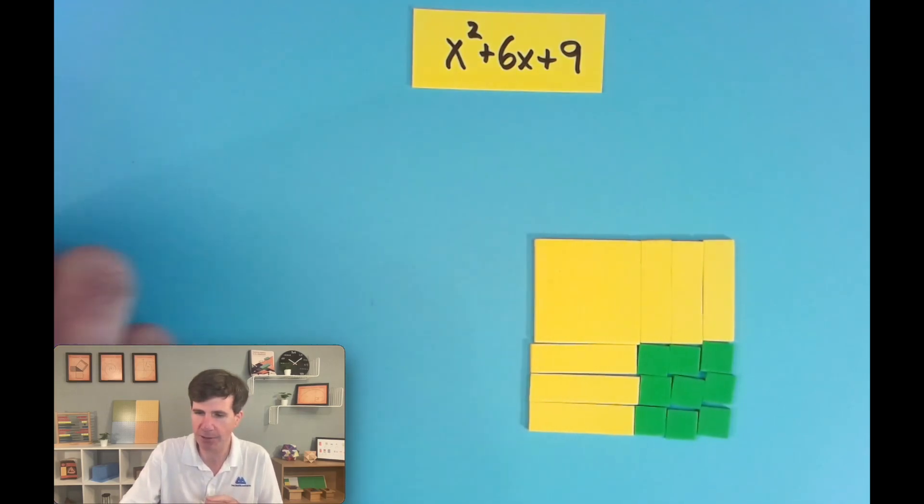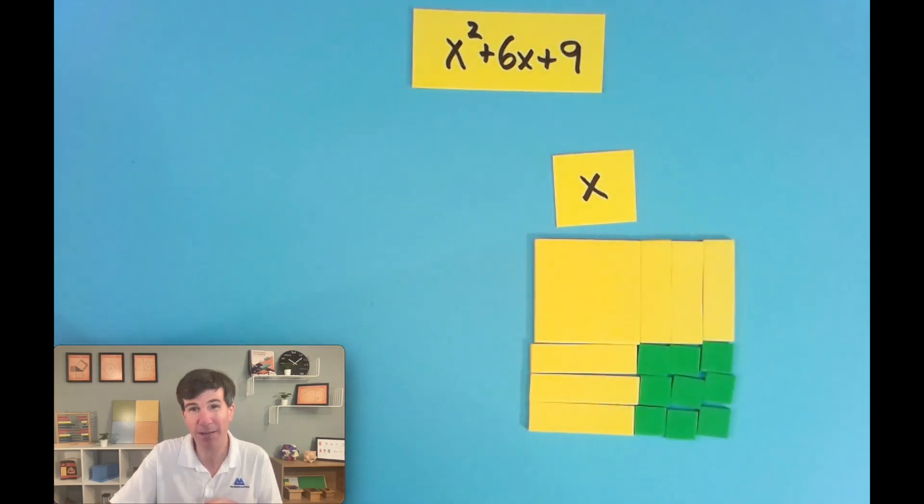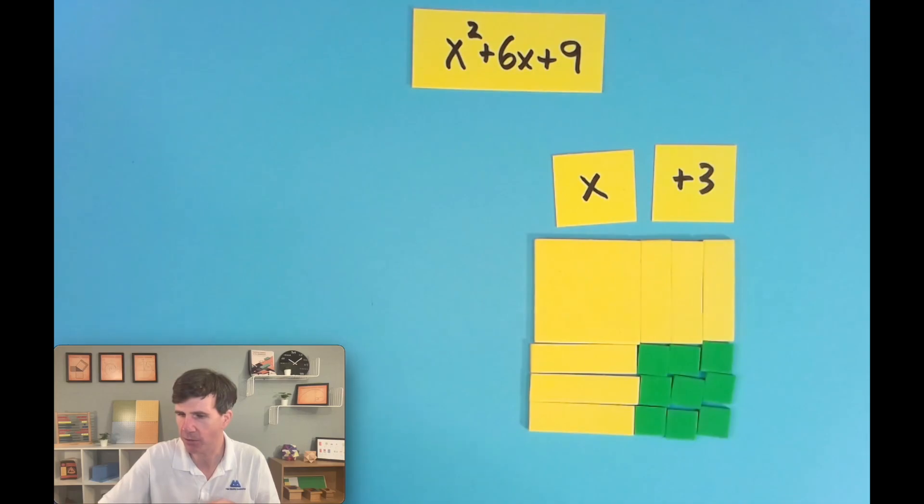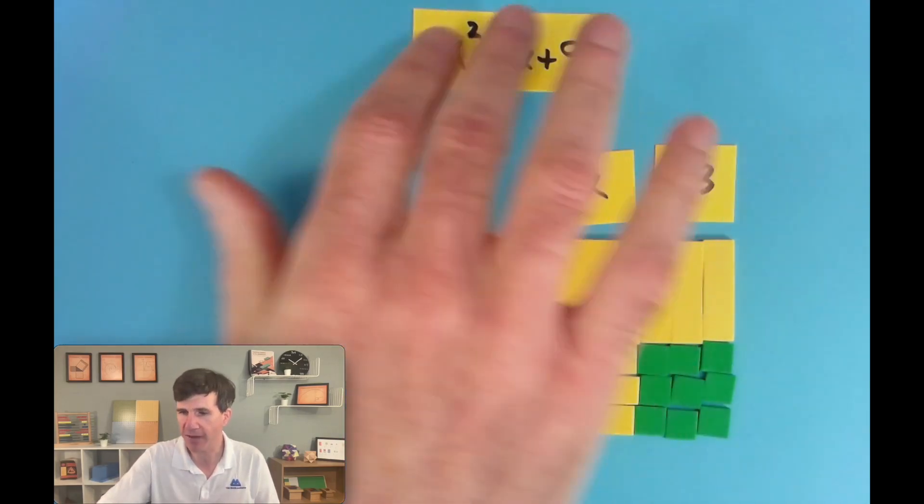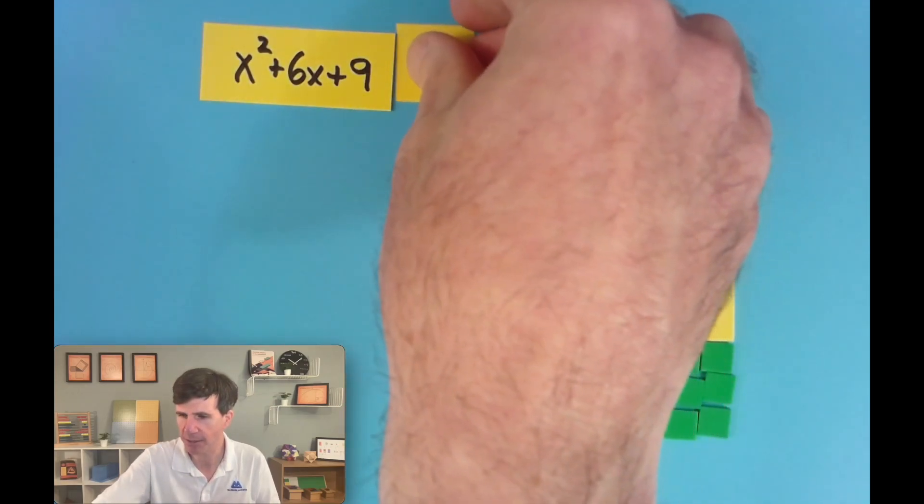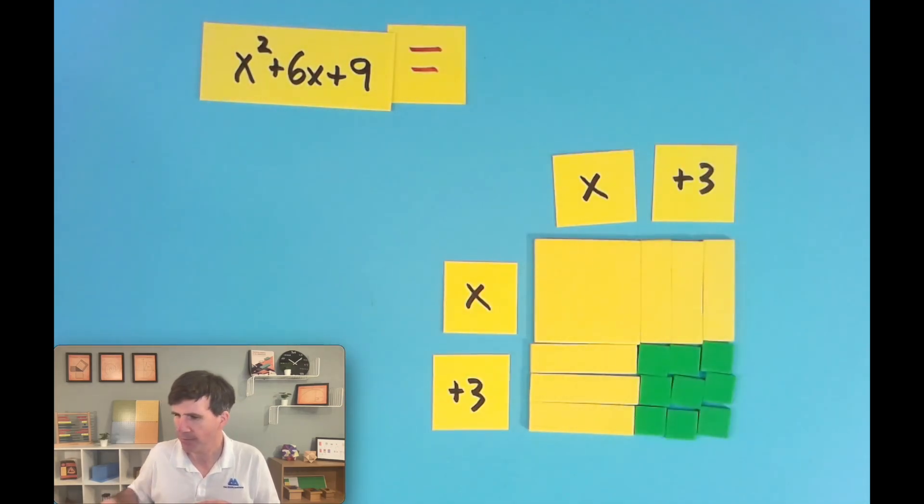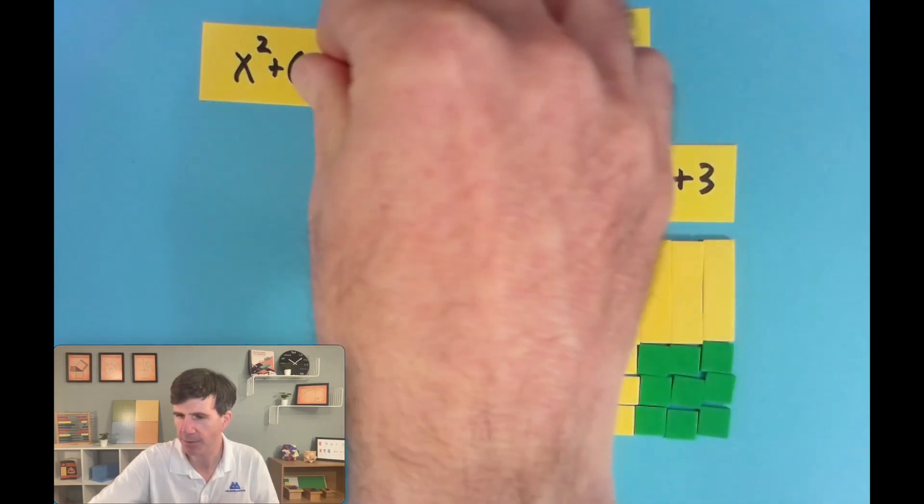Students can label the sides if they want to. It depends on when we're doing this. They might still be in this stage where they're labeling here. Then they can write the factors. So we can say x squared plus 6x plus 9 is x plus 3 times x plus 3.